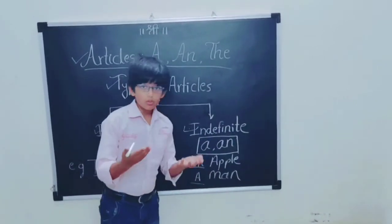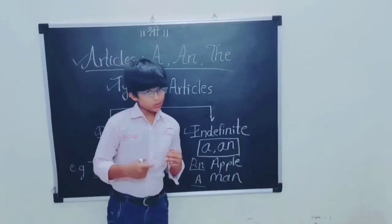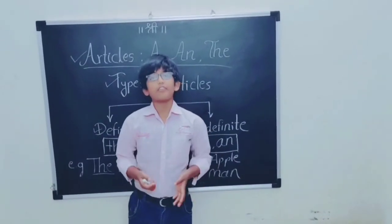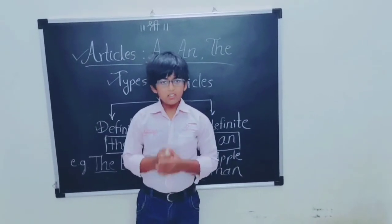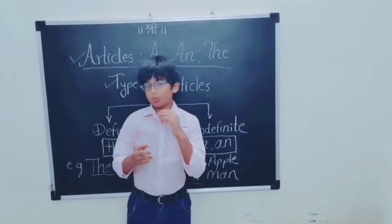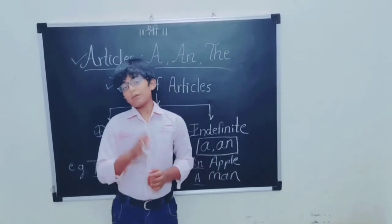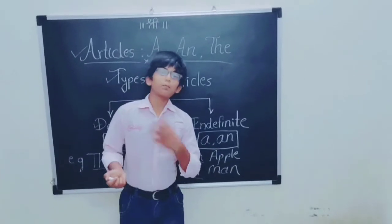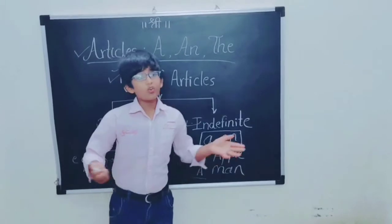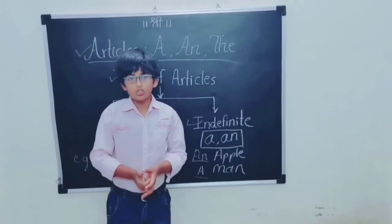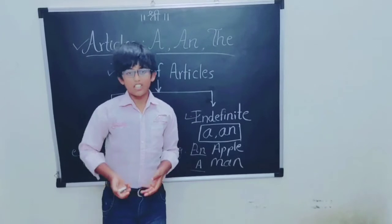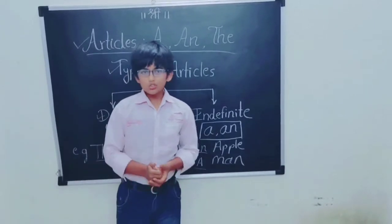Most people get confused about where to use 'a' and where to use 'an.' They know that for indefinite articles we use 'a' and 'an,' but sometimes they put 'a' where 'an' should go, or 'an' where 'a' should go. So how do we reduce this confusion?